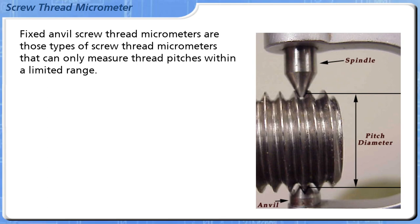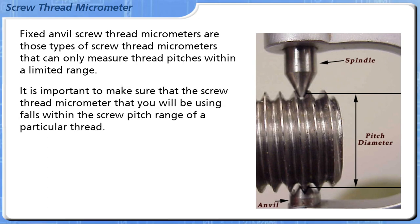Fixed Anvil Screw Thread Micrometers are those types of Screw Thread Micrometers that can only measure thread pitches within a limited range. It is important to make sure that the Screw Thread Micrometer that you will be using falls within the screw pitch range of a particular thread.